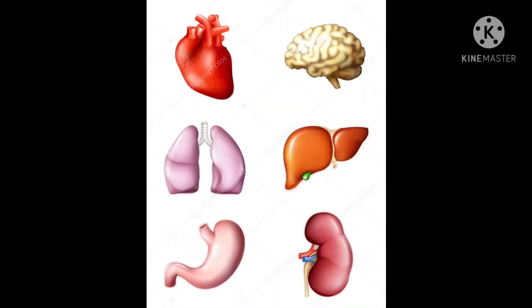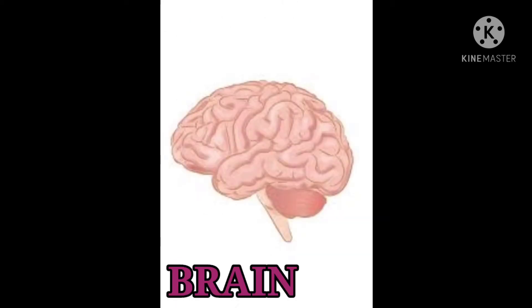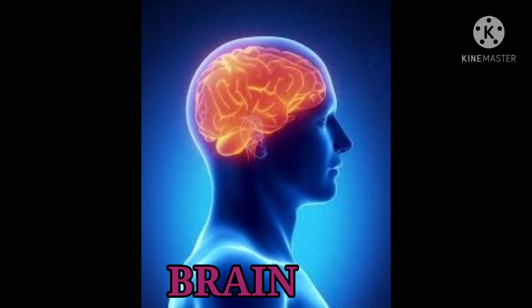They all perform various functions. Now we will study various internal organs and their functions. 1. Brain — the brain helps us to think.